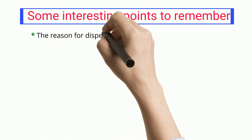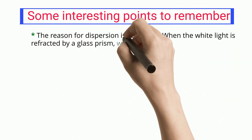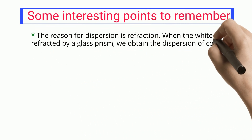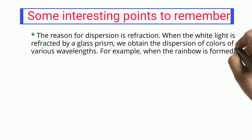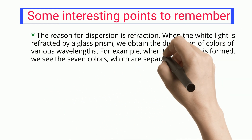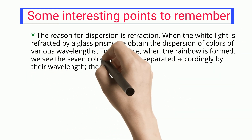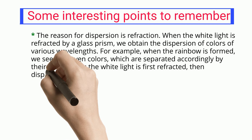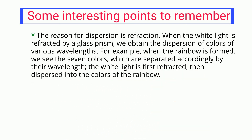The reason for dispersion is refraction. When white light is refracted by a glass prism, we obtain the dispersion of colors of various wavelengths. For example, when the rainbow is formed, we see the seven colors separated by wavelength — the white light is first refracted, then dispersed into the colors of the rainbow.